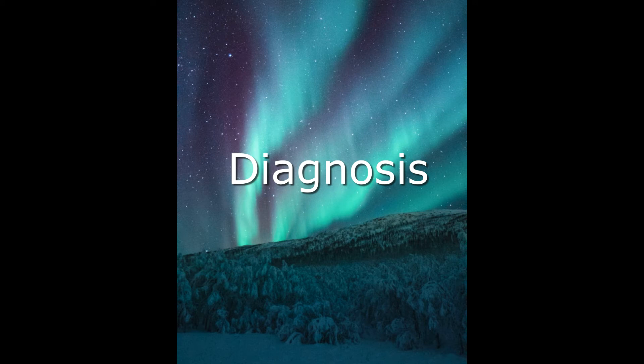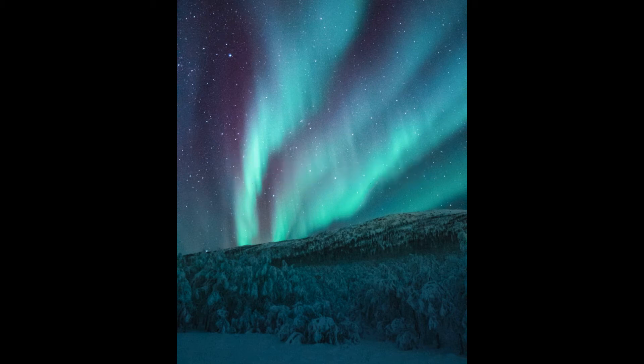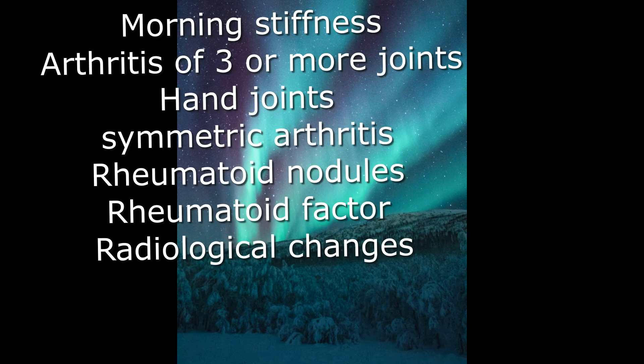Diagnosis of rheumatoid arthritis includes both clinical and radiological findings. A person is said to have rheumatoid arthritis if they have 4 of 7 findings, with findings 1 to 4 being present for at least 6 weeks. The 7 findings include morning stiffness, arthritis of 3 or more joints, arthritis of hand joints, symmetric arthritis, rheumatoid nodules, serum rheumatoid factor, and radiological changes.